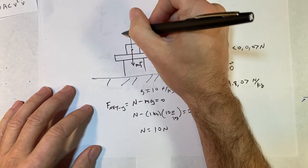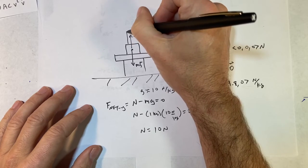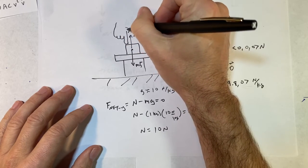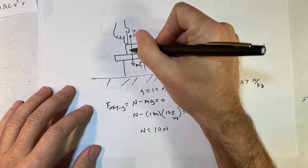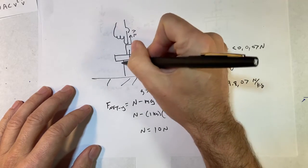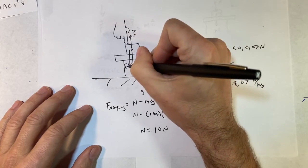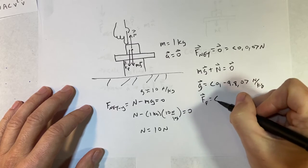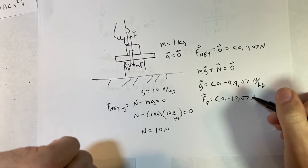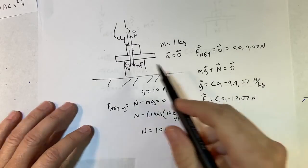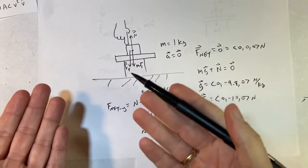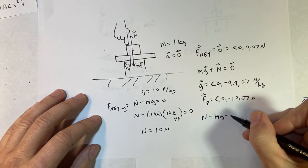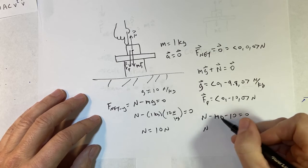Now let's change the problem. So now let's say I take my finger and I push down with a force of 10 newtons. Let's call that F finger: zero, negative 10, zero newtons. Now what's true? Well, it's still at rest, it's still the acceleration zero, but now I have in the y direction I have n minus mg minus 10 equals zero. So if I do the same math, I get n equals 20 newtons—that's the magnitude.